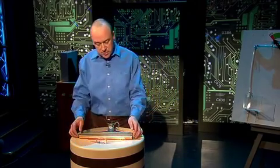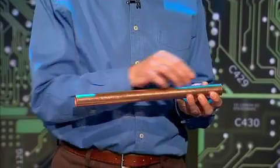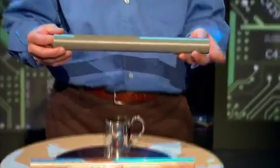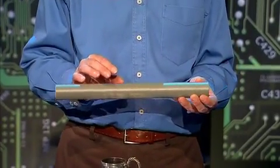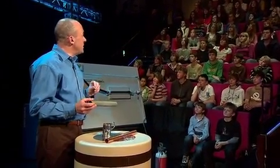And the key to this is a remarkable substance called a semiconductor. Now a semiconductor is something that's part way between a conductor like copper which allows electricity to flow very easily and an insulator such as plastic which doesn't allow electricity to flow at all. And it's that in between property of semiconductors which allows them to be switched very quickly between being an insulator and a conductor and back again.